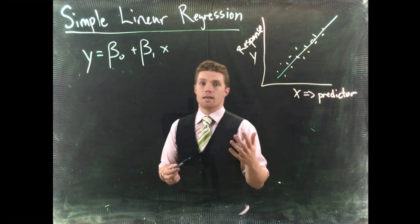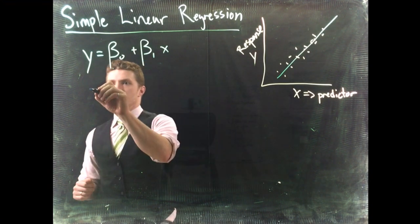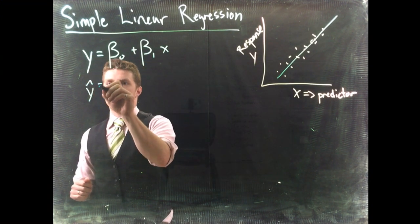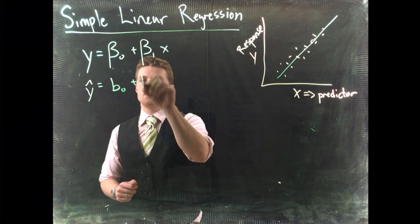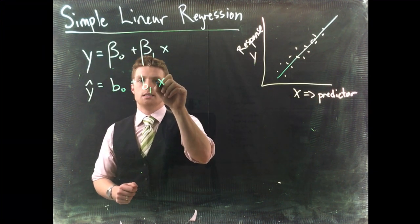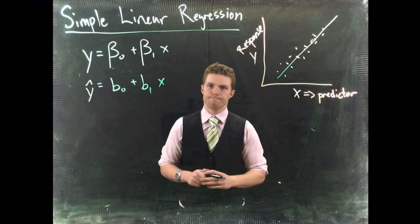Now when we go and collect data, our sample estimates of this, we're going to have y hat equals b naught plus b1 times x. Okay.